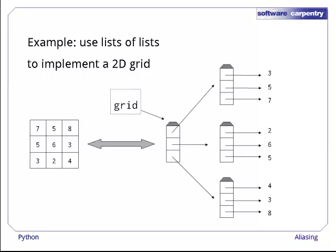If the variable grid refers to the outer list, then grid 0 selects the first sublist, and grid 0, 1 selects the sublist second element. This list of lists therefore gives us the two-dimensional indexing we want.